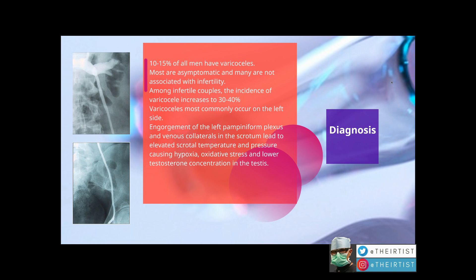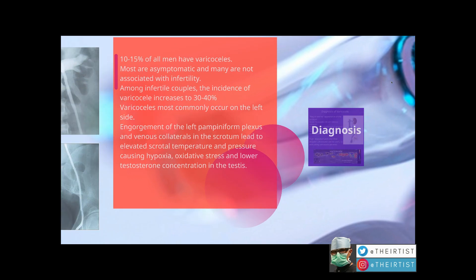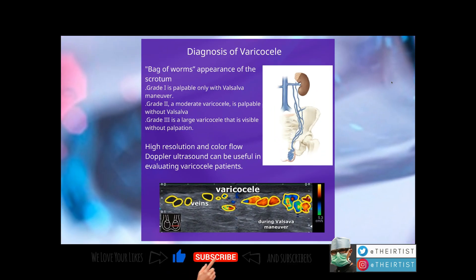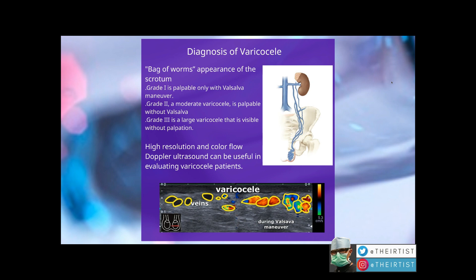The engorgement of the left pampiniform plexus and the venous collaterals in the scrotum will lead to elevated scrotal temperature, pressure causing hypoxia, oxidative stress, and lower testosterone concentration in the testis. The diagnosis is fairly easy. Clinically it gives the sensation of a bag of worms, and they are graded from grade one to grade three according to the severity of the venous reflux. Ultrasound with color flow and Doppler is very useful to diagnose the reflux.